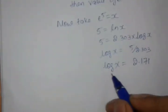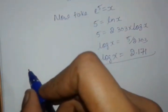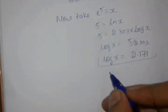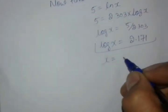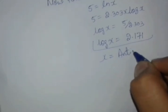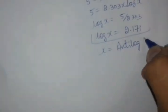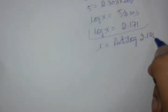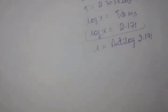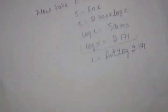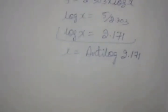Okay, let it be this side friends. Now we should find the value of x is equal to antilog of 2.171. Now you must and should have an antilog book. That means antilog table. Now I will take the table.